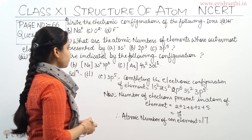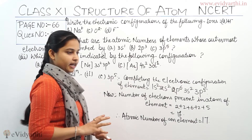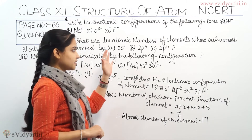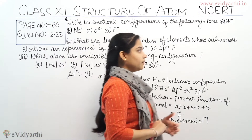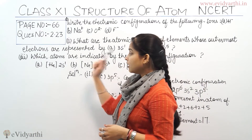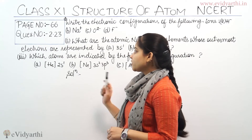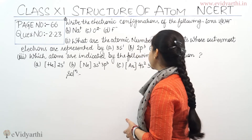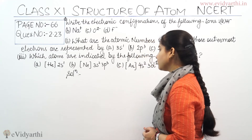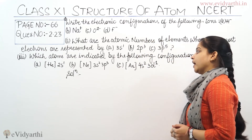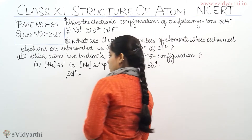All three parts of the second question are now clear — we found the atomic numbers from the outermost electron representations. Now we move on to the third part of this question. The question is: which atoms are indicated by the following configurations? A) Helium 2s1.